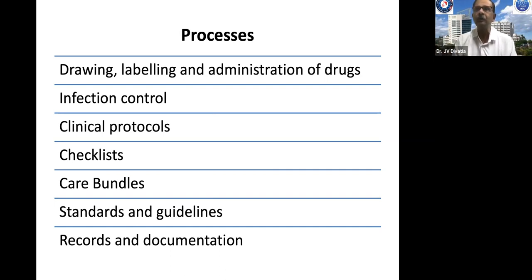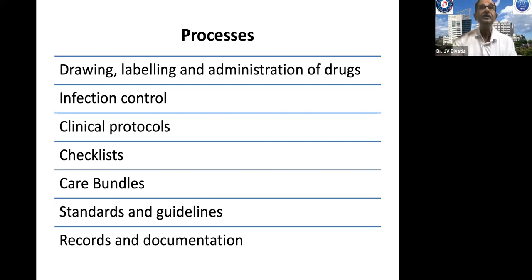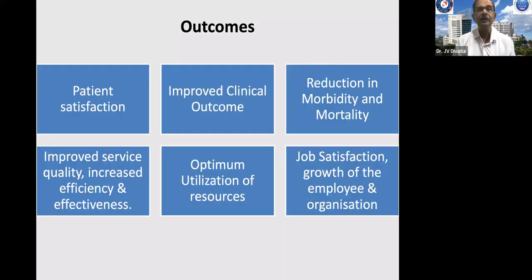Checklists, standards, and guidelines are very important. Documentation — writing down what you've done for each patient — and record-keeping of all cases over the years are mandatory. If what is not written is not done, documentation is essential. You should be able to retrieve information about what happened to your patients and identify patterns or problems over time.